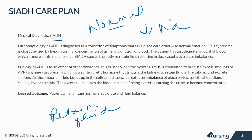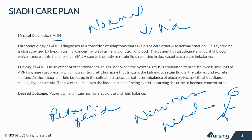SIADH is an effect of other disorders, often nervous system disorders like epilepsy or Guillain-Barré syndrome, head trauma, or cancers of the brain, GI, genitourinary, and pulmonary systems. It is caused when the hypothalamus is stimulated to produce excess amounts of AVP or arginine vasopressin, which is an antidiuretic hormone that triggers the kidneys to retain fluid in the tubules and excrete sodium. As the amount of fluid builds up in the cells and tissues, it creates an imbalance of electrolytes, specifically sodium, causing hyponatremia.